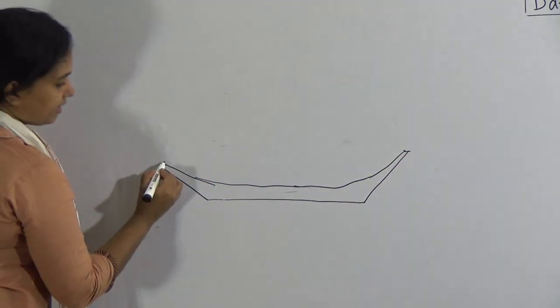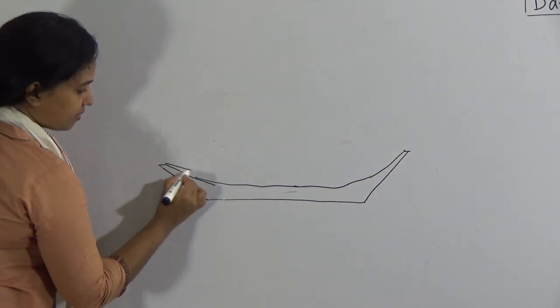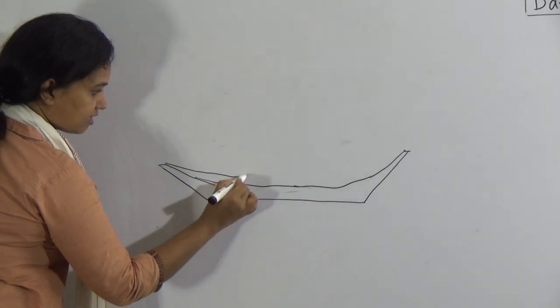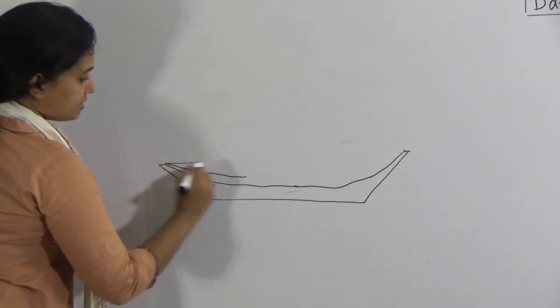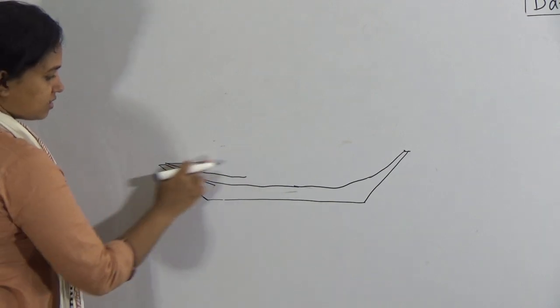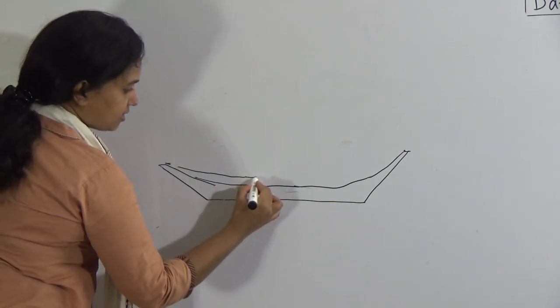Okay, again you will draw a line from here. And this one is the curved line. Some of my students make this type of line. No, this one is wrong. You will give a curved line again.